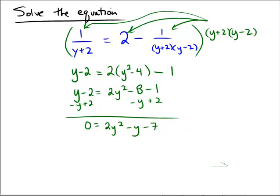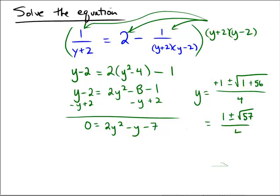Two numbers that multiply to 14 and add to negative 1 won't work, so this one boils down to the quadratic formula. y equals negative b plus or minus the square root of b squared — which is 1 — minus 4 times a times c. So 4 times 14 is 56, all over 2 times a, which is 4. The final answers are 1 plus or minus the square root of 57, over 4.